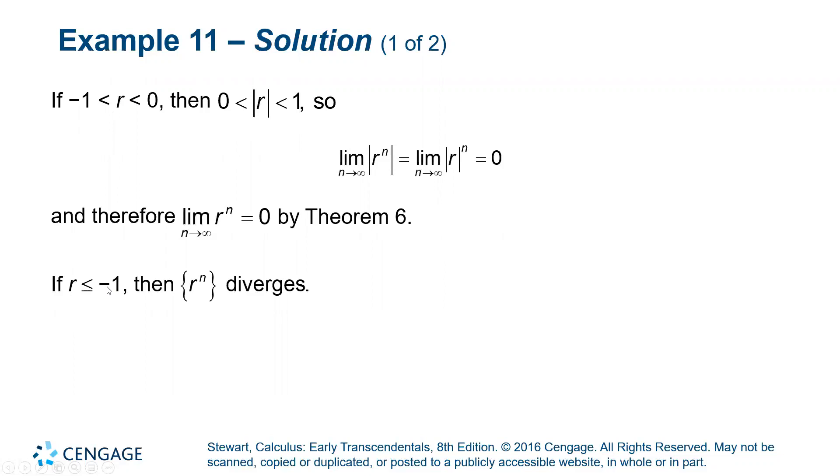And then if R is less than or equal to negative one, R to the N diverges. Because just like when R is positive, you have a large negative value getting even bigger as N approaches infinity.